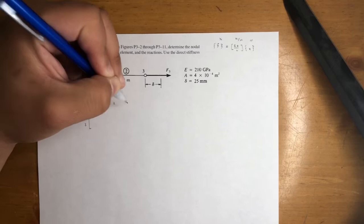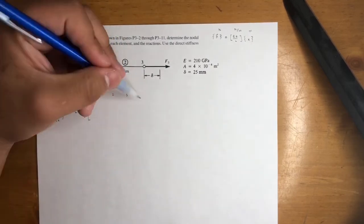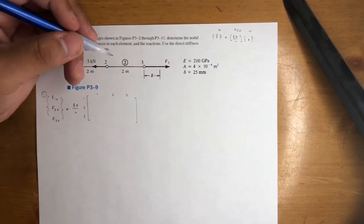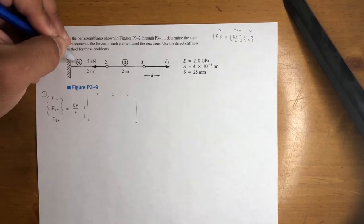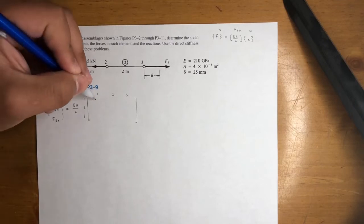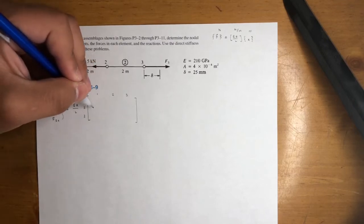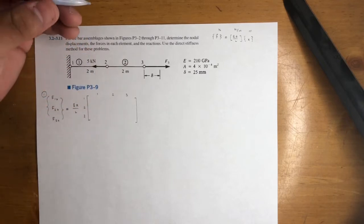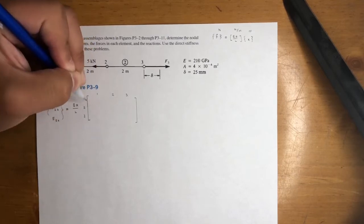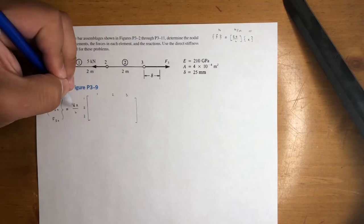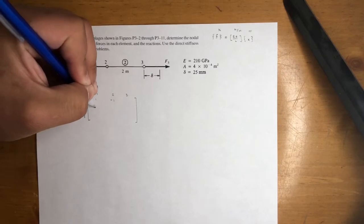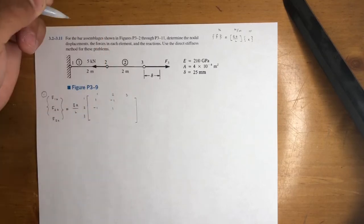Let's go ahead and assemble this matrix. Just as with a spring, you have your element — in this case it's a bar. So instead of K, -K, -K, K, you're going to have EA/L, -EA/L, -EA/L, and EA/L. In this case it's between nodes one and two for the first element — so it occupies spots (1,1), (1,2), (2,1), (2,2). Since we already factored out EA/L, it's just 1, -1, -1, and 1.